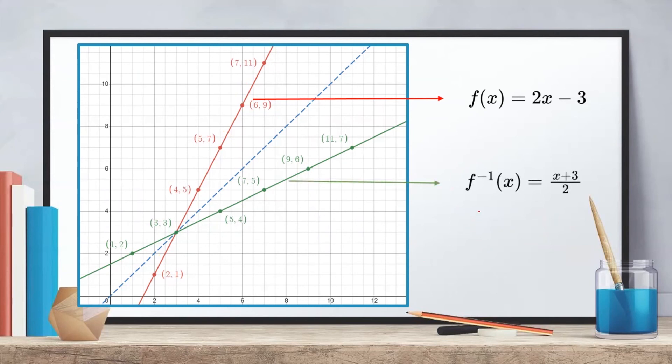This is the graph of the inverse f(x) which is equal to (x plus 3) all over 2 with coordinates (1, 2), (3, 3), (5, 4), (7, 5), (9, 6), and (11, 7). Notice that the two graphs are mirror images of each other with respect to the line y equals x.